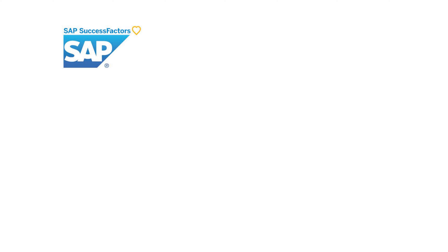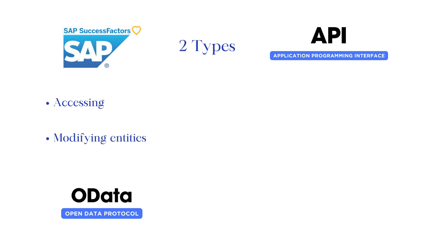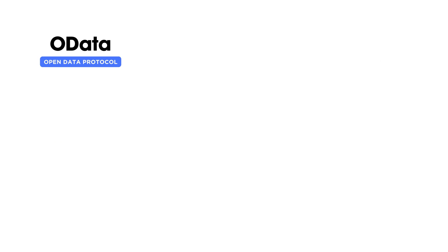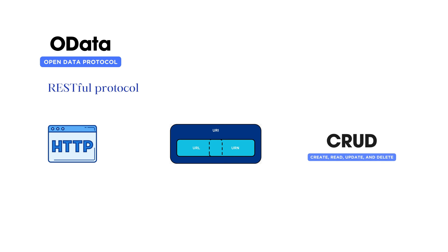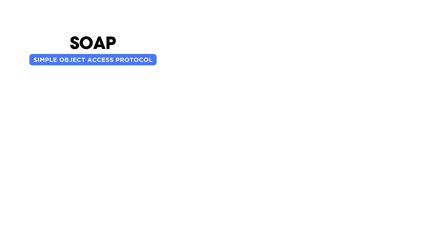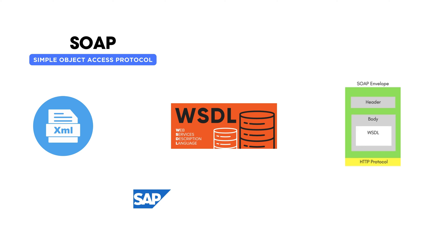SAP SuccessFactors provides two types of APIs for accessing and modifying these entities. The first one is OData, and the second one is SOAP. OData API is a RESTful protocol that uses HTTP methods and URIs to perform CRUD operations on SuccessFactors entities. SOAP API is an XML-based protocol that uses WSDL and SOAP envelopes to exchange messages between systems. The systems can be a SAP system or a third-party system.